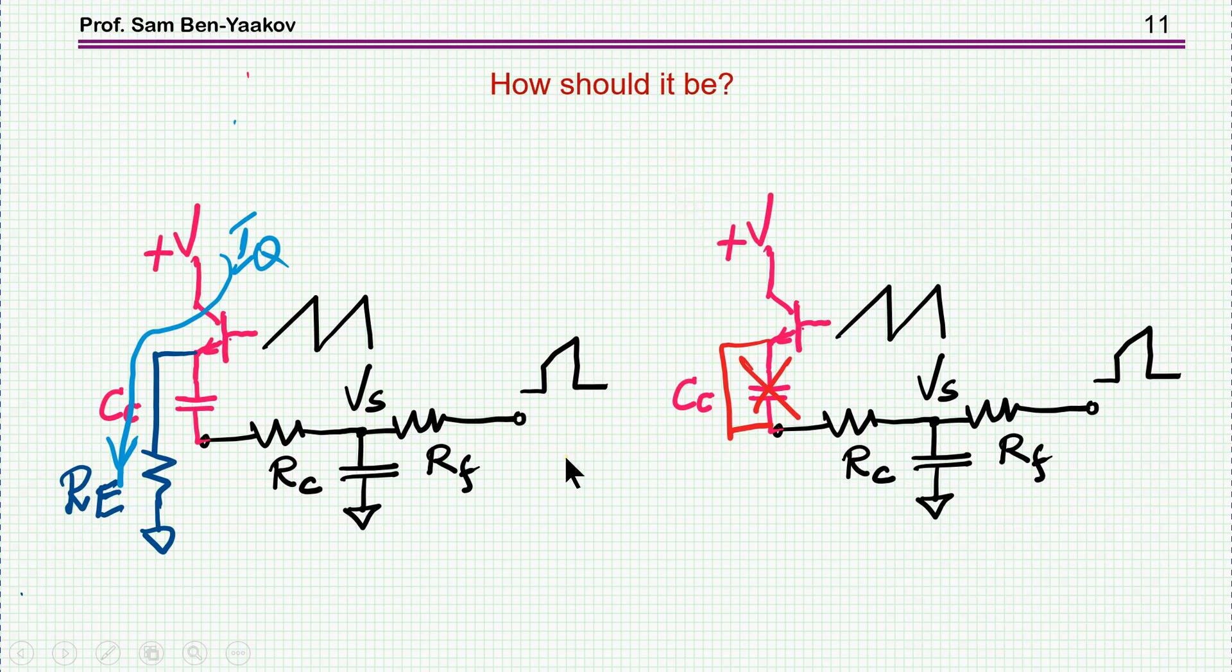So the question is, how should this circuit be? Well, there are two ways to do it. Number one, you can put a resistor here to allow a quiescent current around which you have this perturbation or the AC component, like any other biased BJT, which is one way to go.